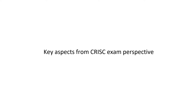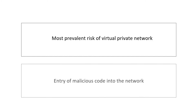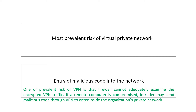From an exam perspective, the most prevalent risk of a virtual private network is entry of malicious code into the network. One prevalent risk of VPN is that a firewall cannot adequately examine the encrypted VPN traffic. If a remote computer is compromised, there is a chance an intruder may send malicious code through VPN to enter inside the organization's private network.